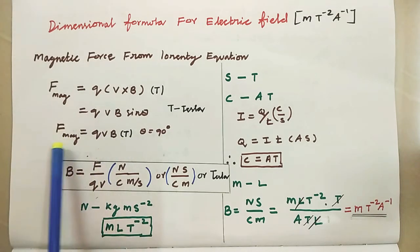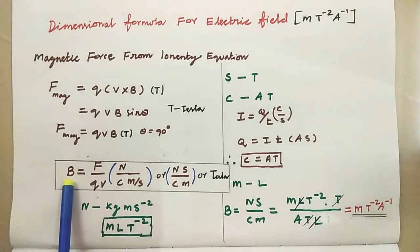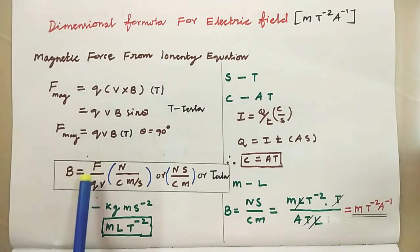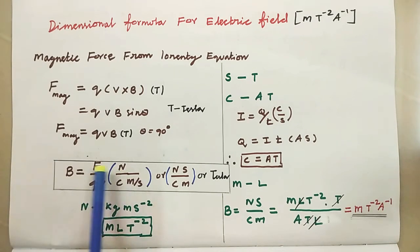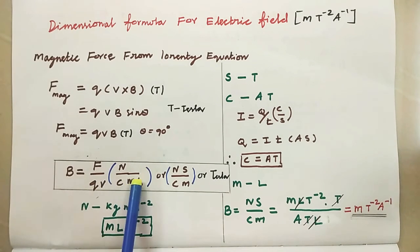So, magnetic force we can write as QVB. Therefore, the magnetic field equal to force per charge into velocity. The unit of the force is Newton per charge, coulomb, velocity, meter per second.